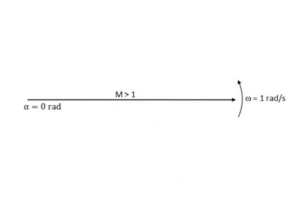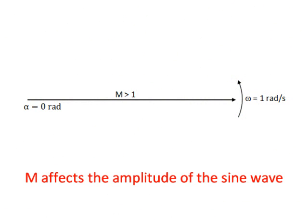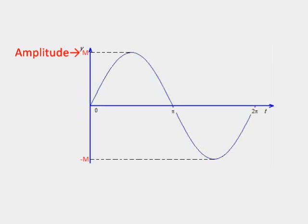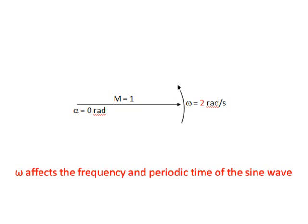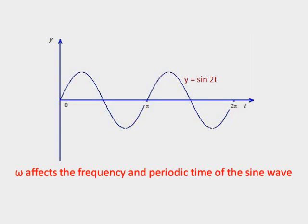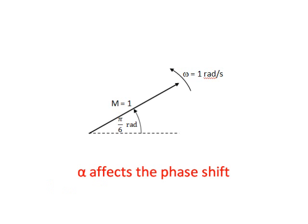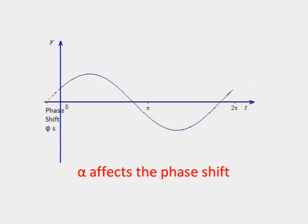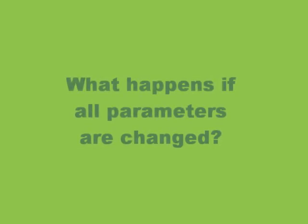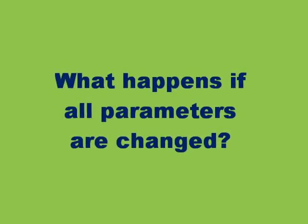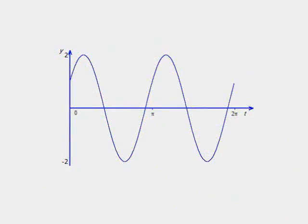To summarize: a change in magnitude affects the amplitude of a sine wave. A change in angle of velocity affects the frequency and periodic time of a sine wave. While a change in phase angle affects the phase shift of a sine wave. It is entirely possible to have varying amplitude, frequency, and phase shift occurring simultaneously.